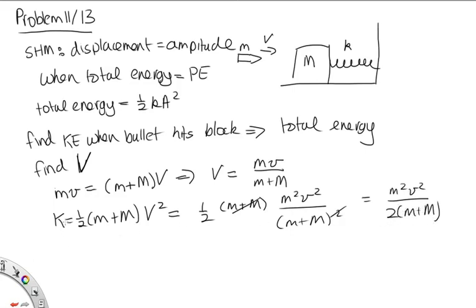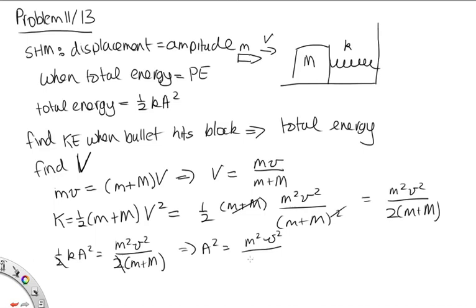We've got the kinetic energy, which equals the total energy. When that total energy is fully transferred into the spring, we find the amplitude. So one half k A squared equals m squared v squared over 2(m plus M). The factors of 2 cancel, giving A squared equals m squared v squared over k(m plus M). Taking the square root, the amplitude A equals m v over the square root of k(m plus M).